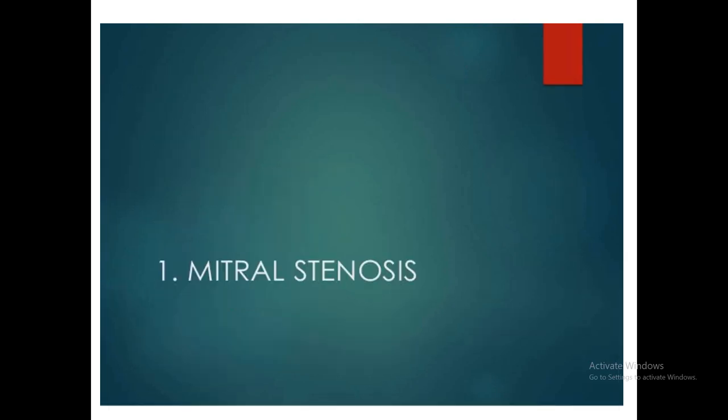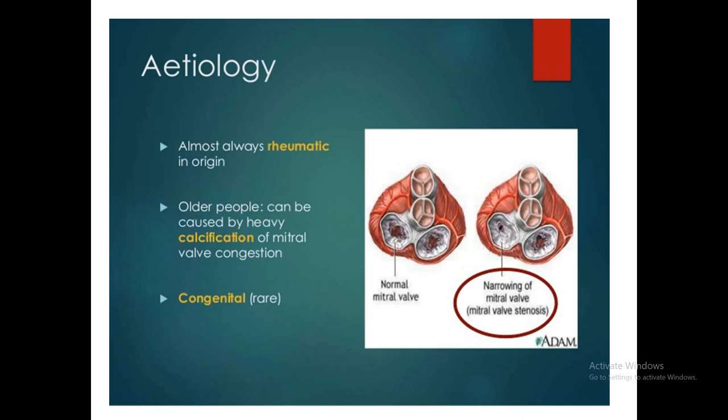We start with mitral stenosis — the narrowing of the valve — almost rheumatic in origin in most people of the world. The mitral valve may be involved alone, or with the aortic valve in 20% of cases. Three valves can be involved in about 7–8% of cases, and all four valves in rheumatic disease in about 1–2% of cases — tetravalvular disease. 80% of cases involve only the mitral valve in rheumatic disease. Older people may have heavy calcification; degenerative stenosis is rare, and congenital stenosis is hardly seen.